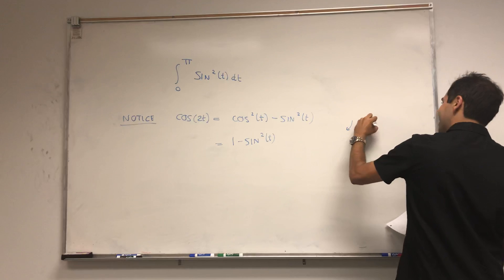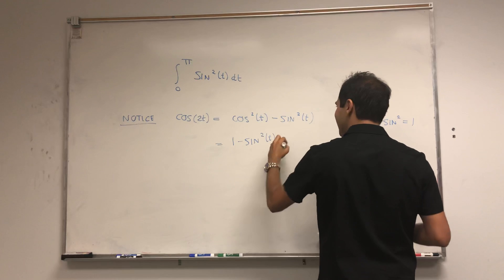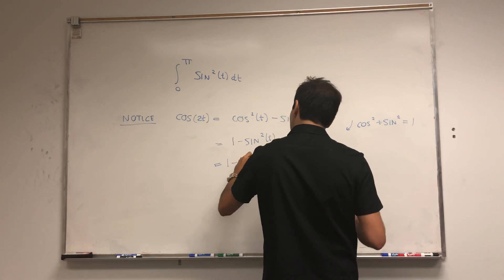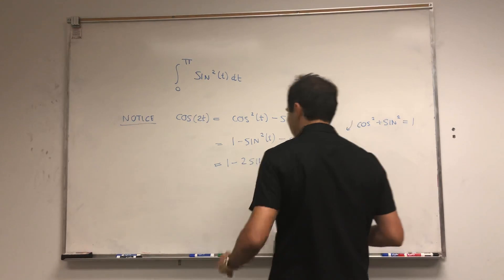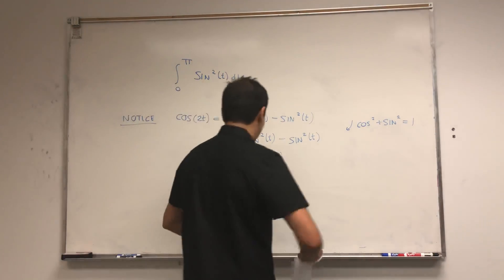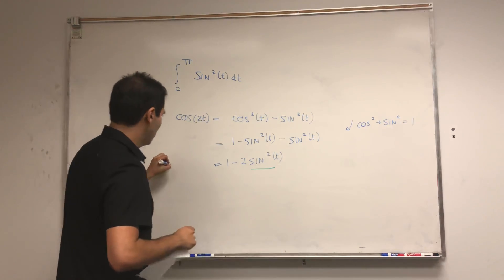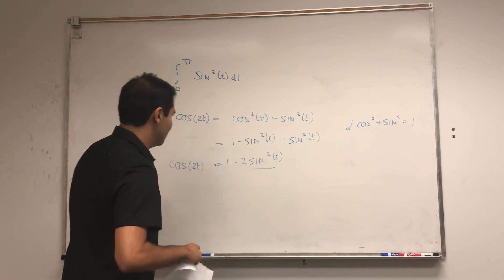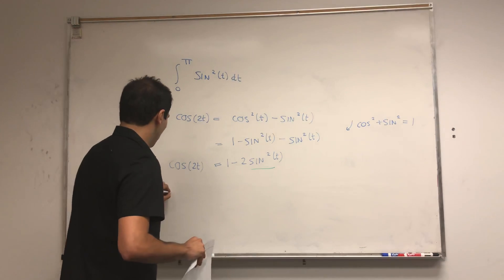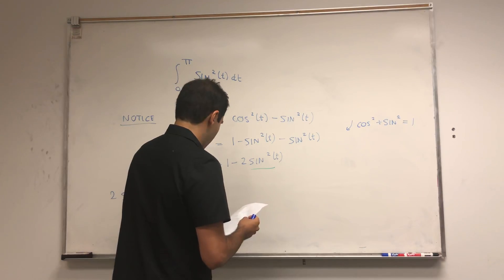We can transform this by substituting cosine squared with 1 minus sine squared of t, since cosine squared plus sine squared equals 1. So it becomes 1 minus sine squared of t minus sine squared of t, which is 1 minus 2 sine squared of t. Now we can solve for sine squared of t: 2 sine squared of t equals 1 minus cosine of 2t.